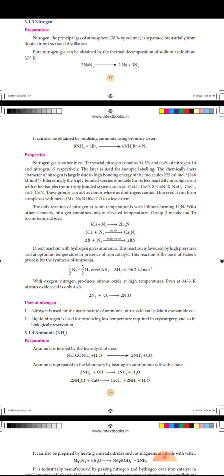Present as 75% by volume, nitrogen is separated industrially from liquid air by fractional distillation.